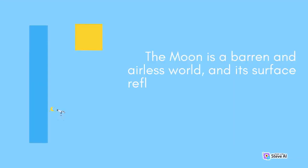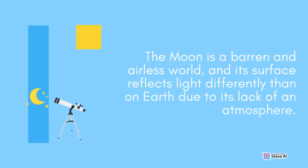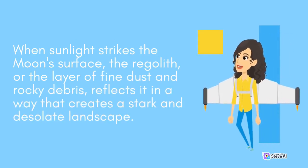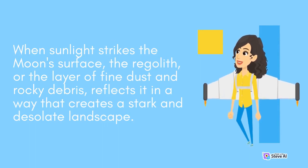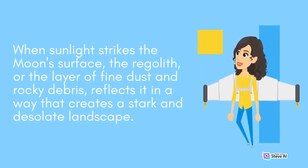The Moon is a barren and airless world, and its surface reflects light differently than on Earth due to its lack of an atmosphere. When sunlight strikes the Moon's surface, the regolith — the layer of fine dust and rocky debris — reflects it in a way that creates a stark and desolate landscape.